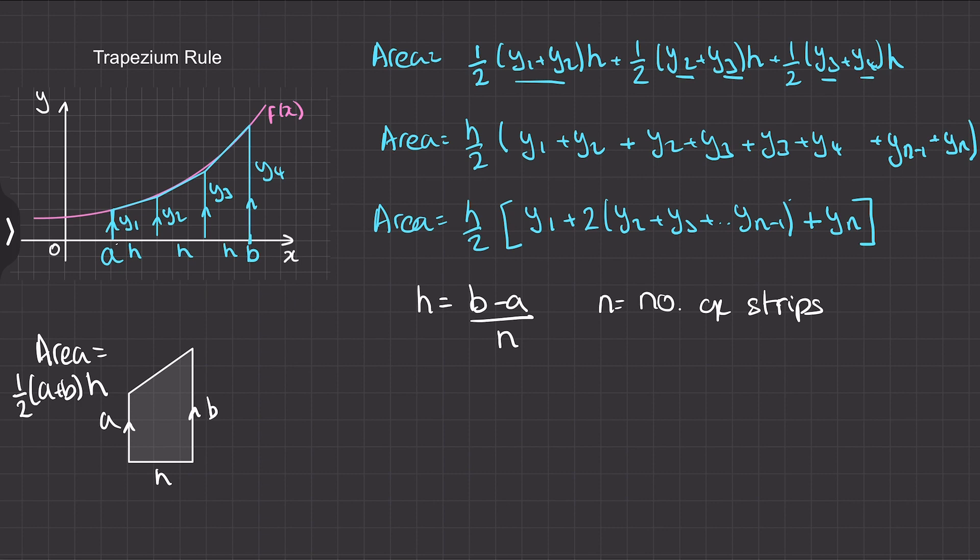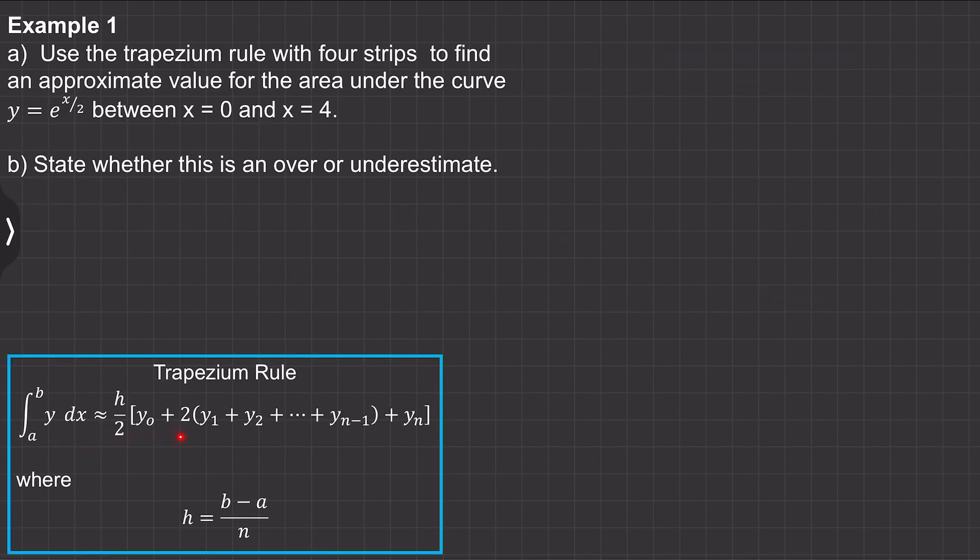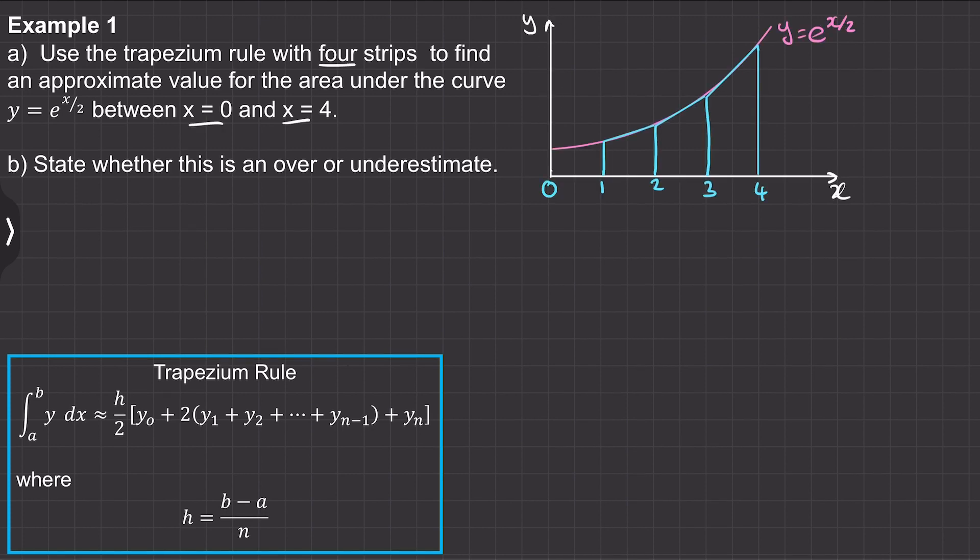So in question one we're going to use this formula to estimate the area under a curve. Okay, let's move on to question one. So here we have this general formula and we've been asked to use this formula which is the trapezium rule with four strips to find an approximate value for the area under the curve of y equals e to the x over two between x equals zero and x equals four.